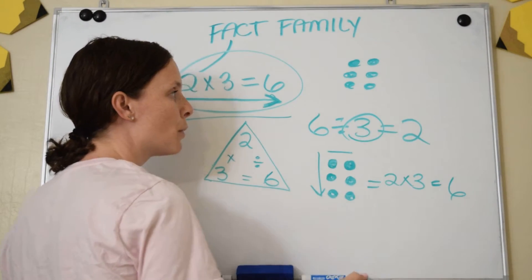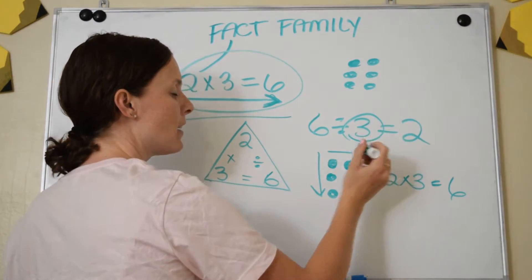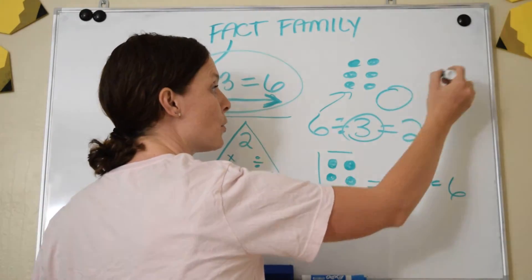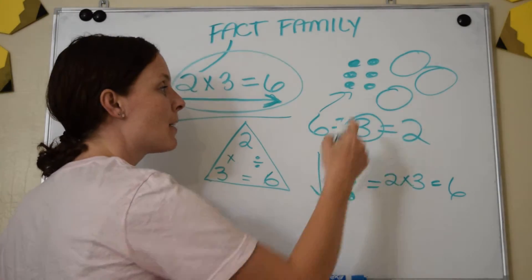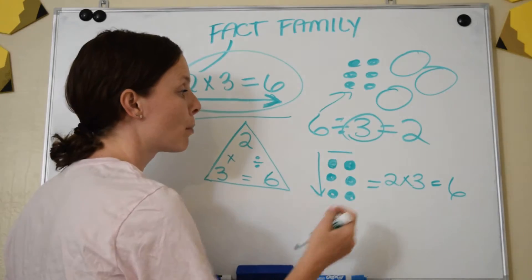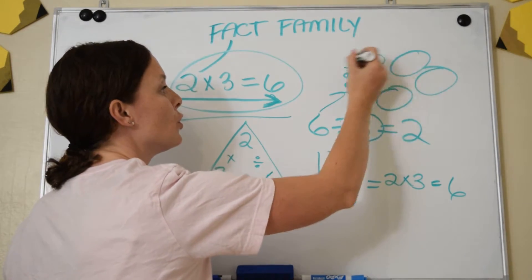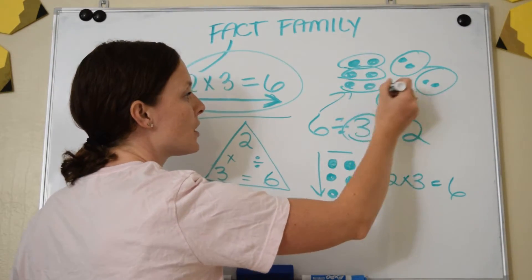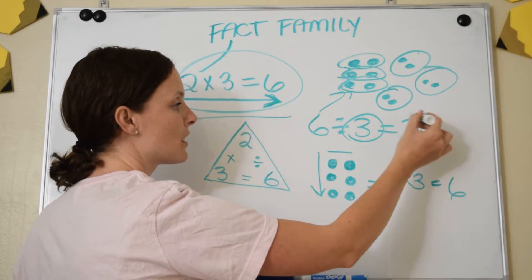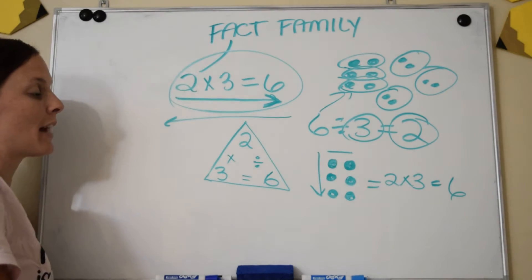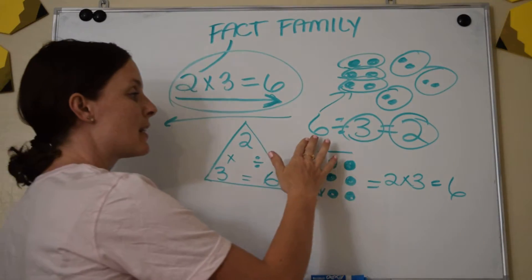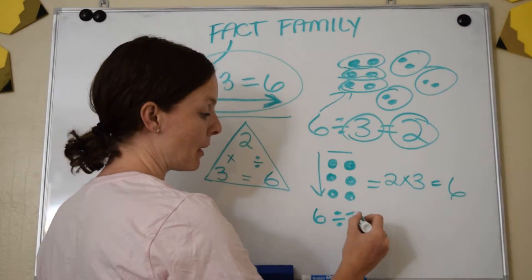Now, what if I took those six dots and divided them into three equal groups? I should have two in each group. When we divide, six is the total — the number being divided. The divisor three means I need three equal groups, and the answer is how many go in evenly. I can put two here, two here, and two here — equal groups. How many were in each group? Two. So 6 divided by 3 is 2. We just showed that 2 times 3 equals 6 is related to division: 6 divided by 3 is 2. You can also say 6 divided by 2 is 3, because it's part of the same fact family.